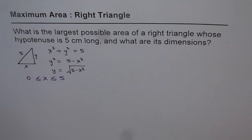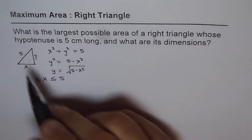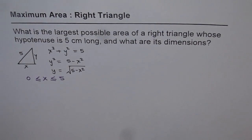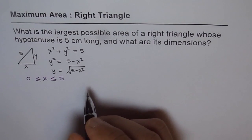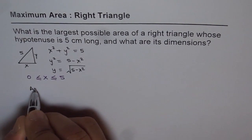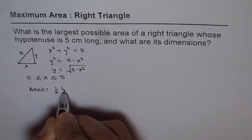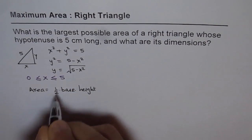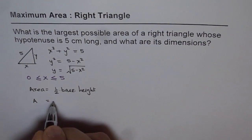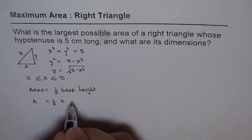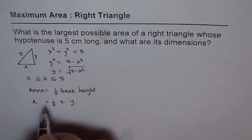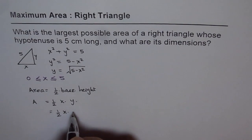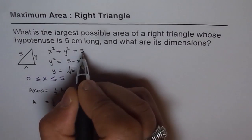Now we need to maximize the area of this triangle. To maximize area, we differentiate our function and find the maximum value. Area of a triangle is half base times height, so area equals half times x times y, and substituting y we get area equals half x times the square root of 25 minus x squared.